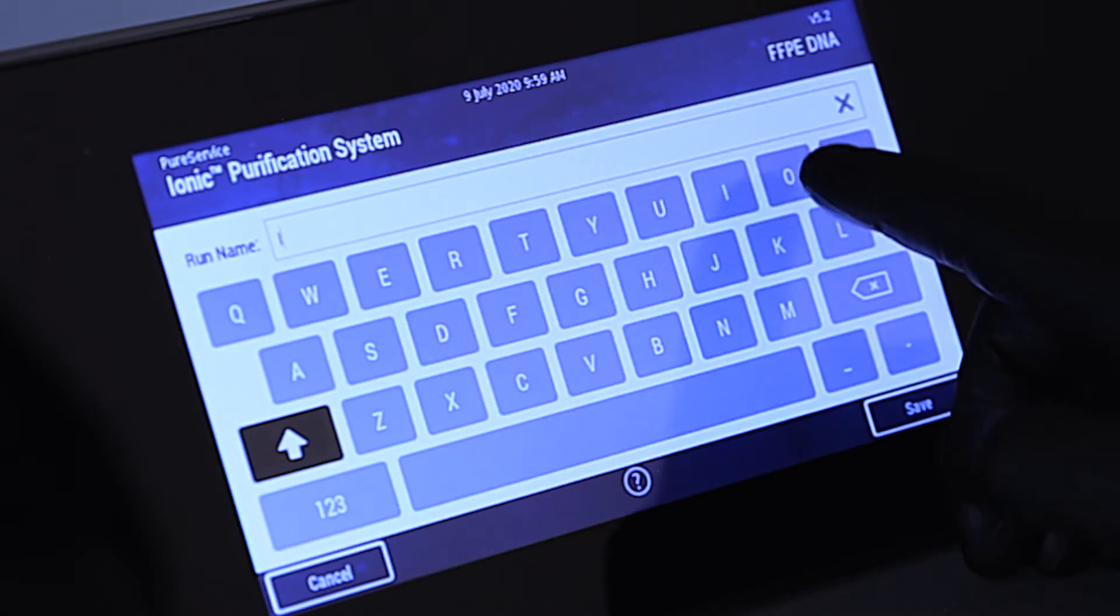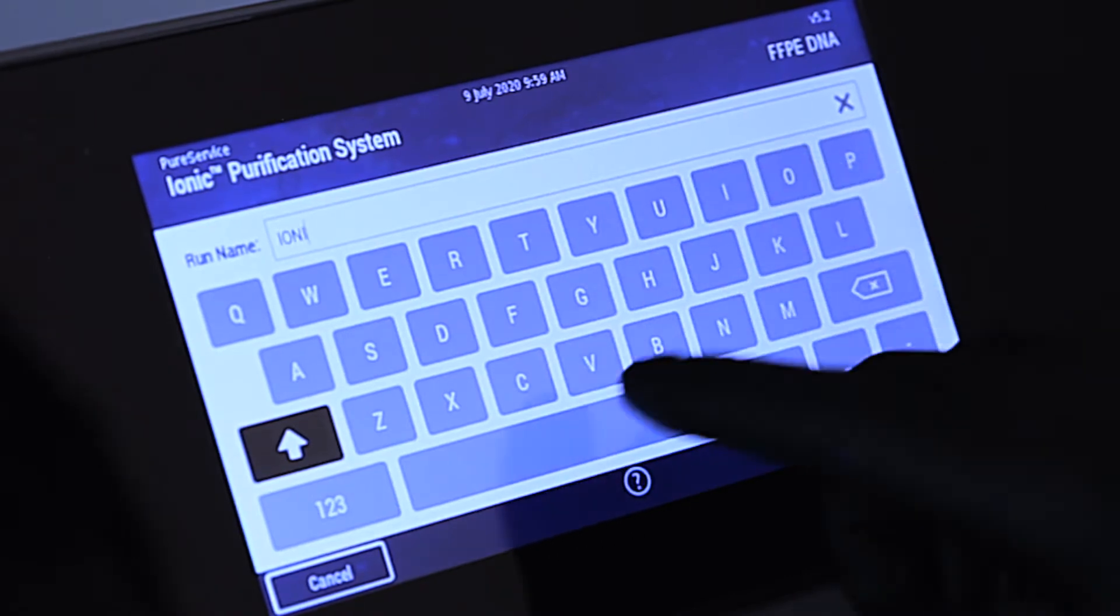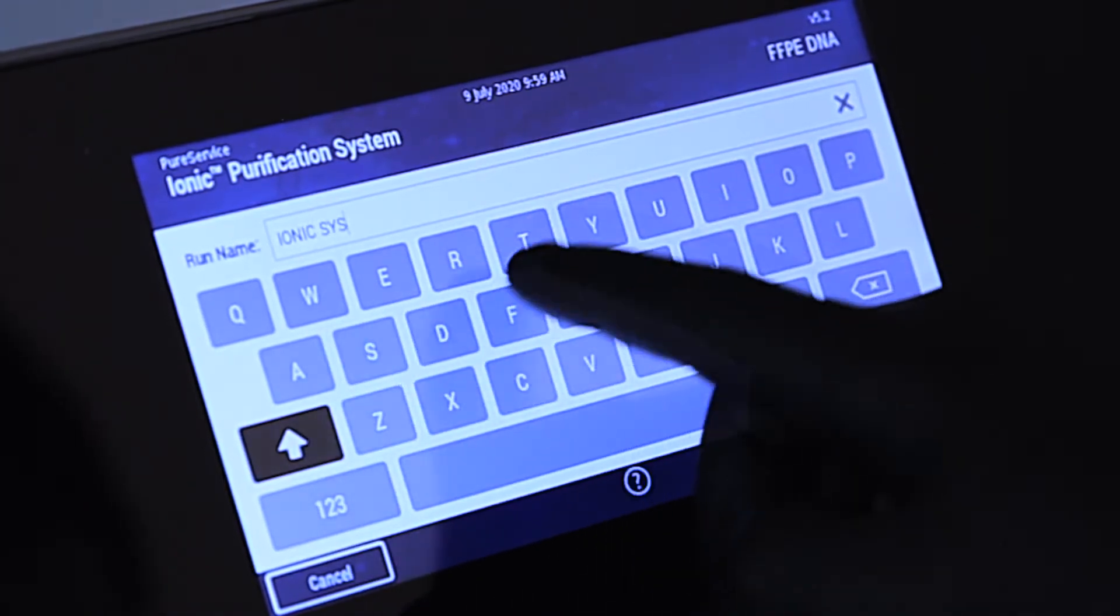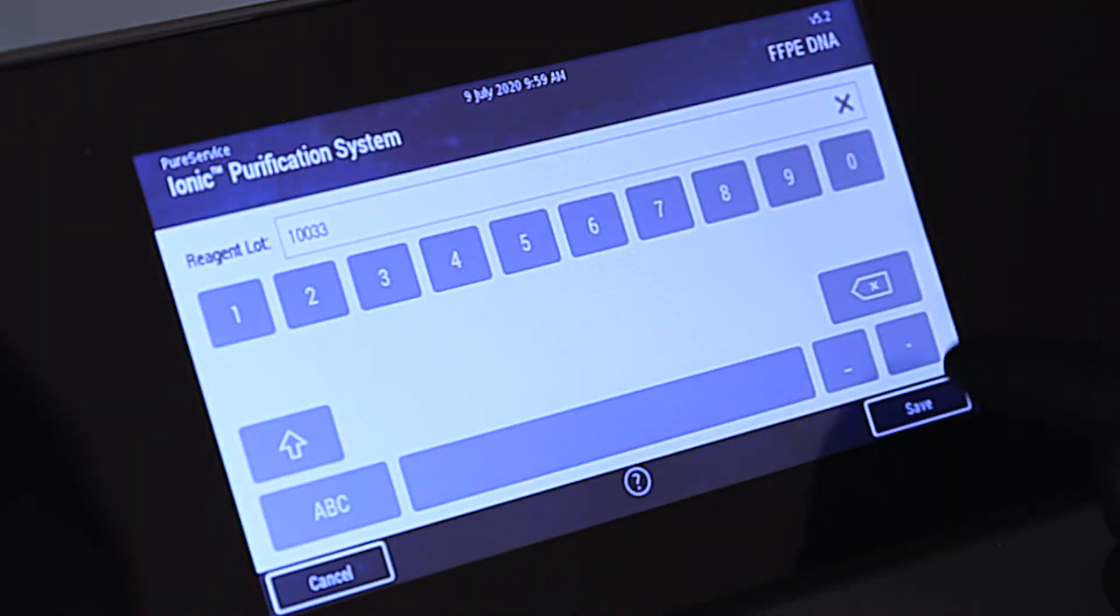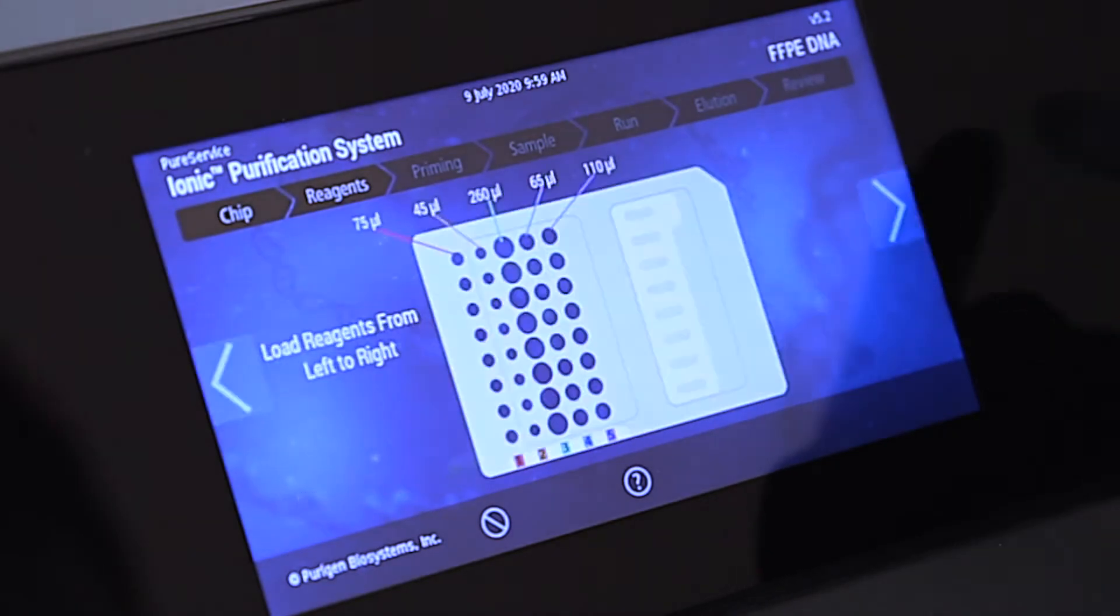Information about the experiment and the fluidic chip can be entered into the touch screen. This information will be recorded along with the run results and log files that can be retrieved from the system after the run is complete.